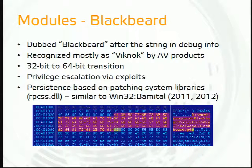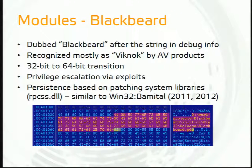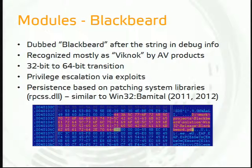We found the threat we dubbed 'Blackbeard' as the most interesting. The string was found in debug info. This threat is generally recognized as a big knock by competing antivirus products. The most interesting technical aspects include 32-bit to 64-bit transition of code execution, various methods of privilege escalation via exploits, and an invasive persistence mechanism based on patching the system library rpcss.dll. We found this sample is similar to a malware family called Bamital, which also performed click fraud and was active in 2011–2012.